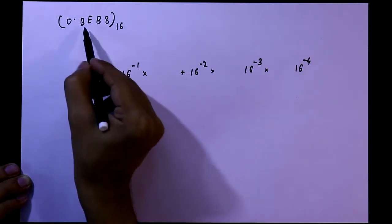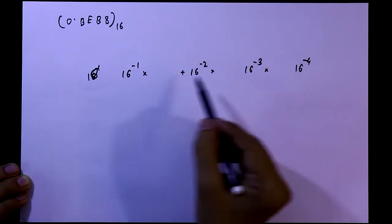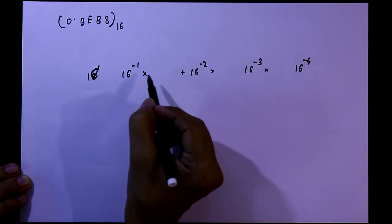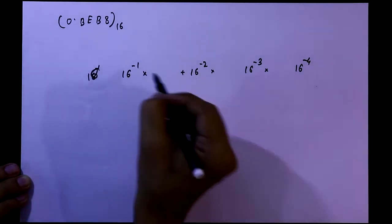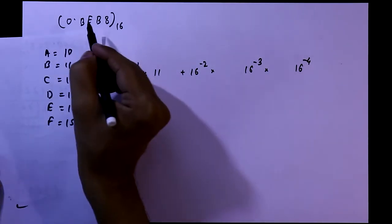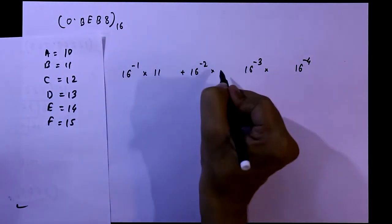As we have 4 digits, so I have written 4 times. And now we have to write the B, B is equivalent to 11, then we have E, E means 14.